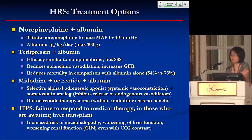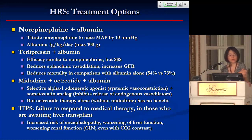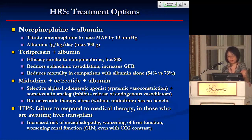If they're less critically ill, there's an option of terlipressin and albumin in combination. This isn't used often in the U.S. but is used in Europe because terlipressin isn't FDA approved yet. Head-to-head trials show efficacy similar to norepinephrine and albumin, but it's considerably more expensive. The same physiological mechanism applies — reducing splanchnic vasodilation to increase GFR. European studies have shown it reduces mortality compared to albumin alone.